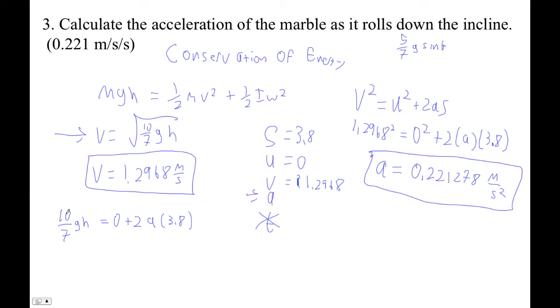So now all we have to do is divide that by 2. Divide this guy by 2, and we end up with 5 sevenths g h equals a times 3.8.